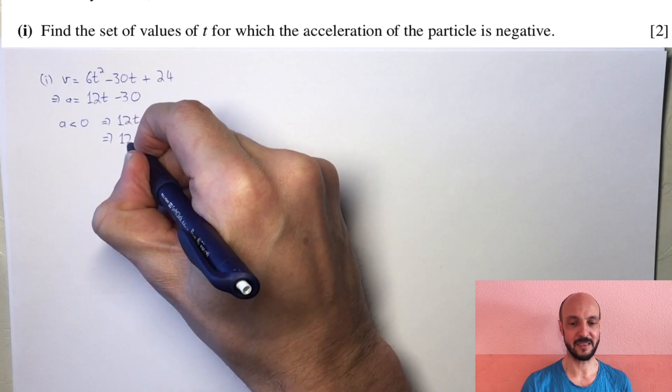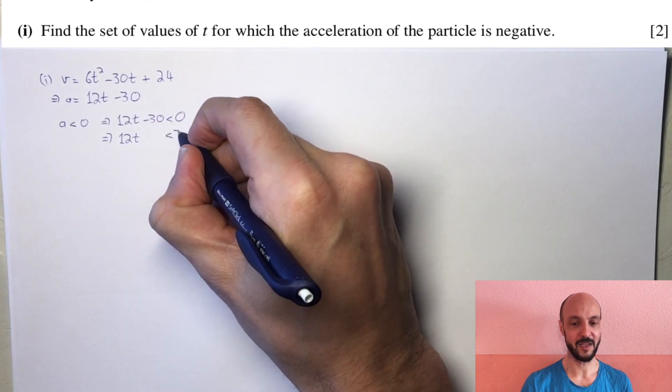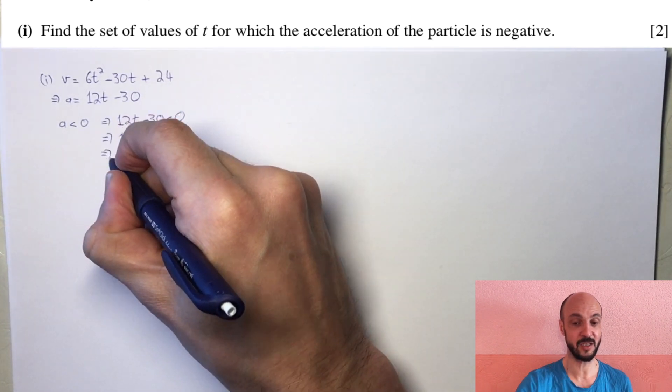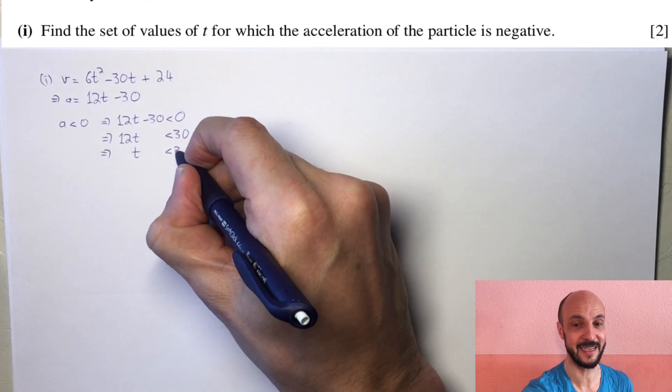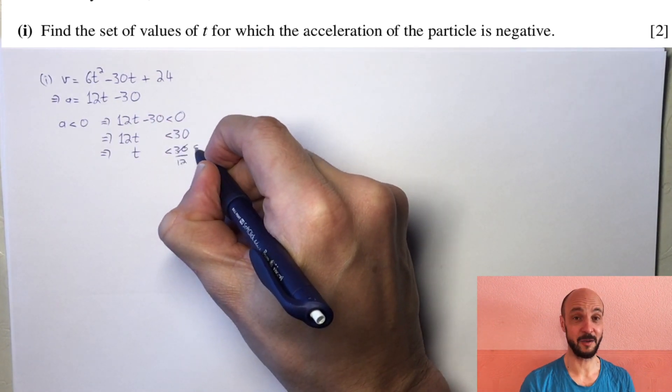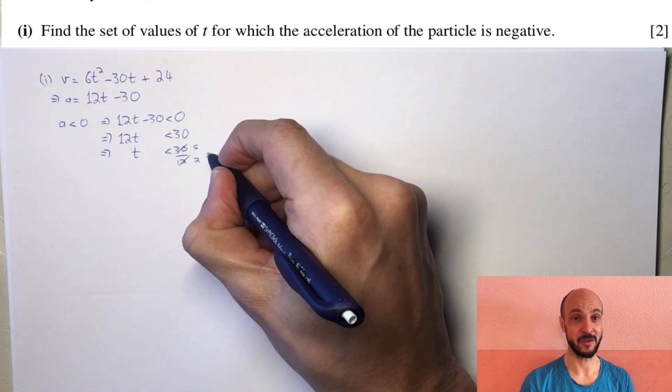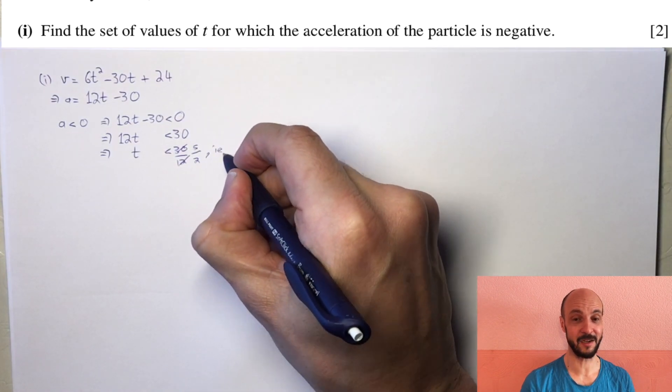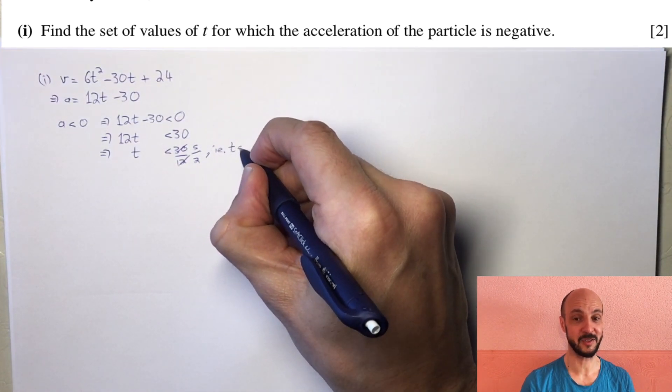We can divide both sides by 12 so t is less than 30 over 12, or t is less than 2.5. In set notation, t belongs to the interval from 0 to 2.5.